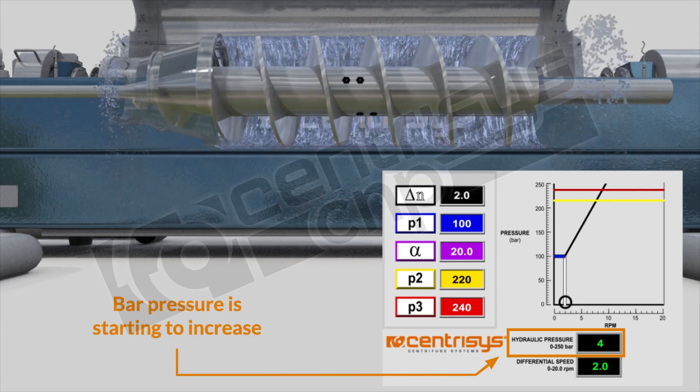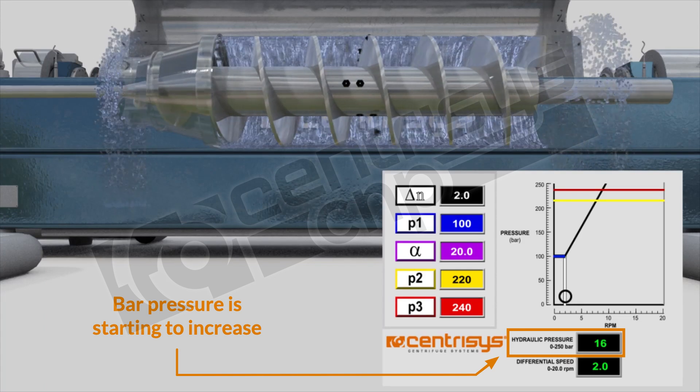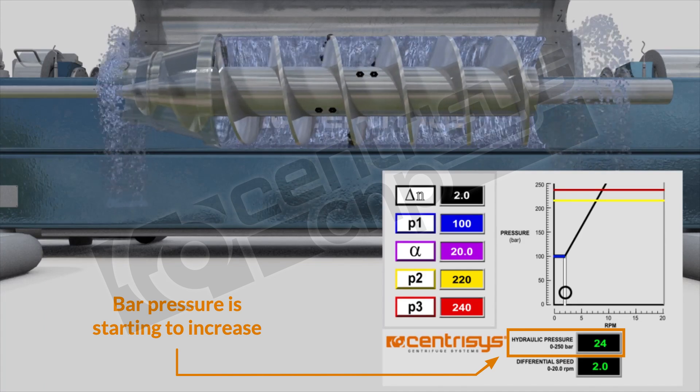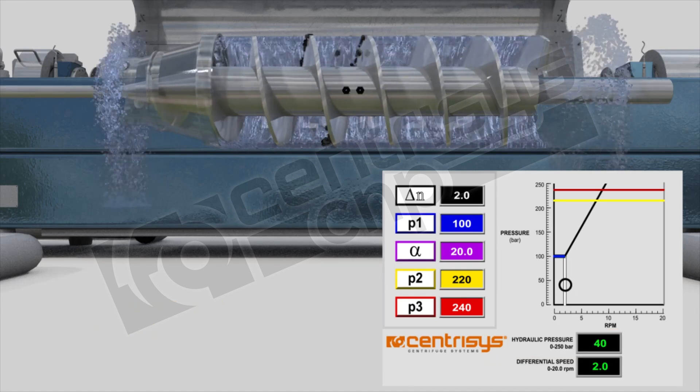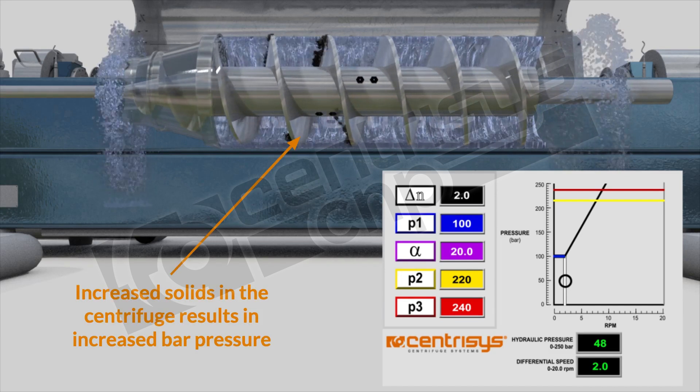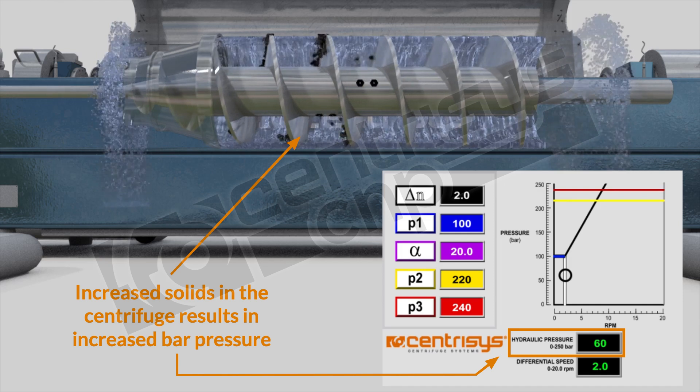Now still at two differential speed, consistent at the bar pressure, starting because there's more resistance because the solids particles are entering the space between the bowl and scroll. The more solids are here, the higher the bar pressure will climb.